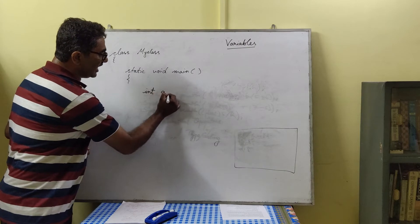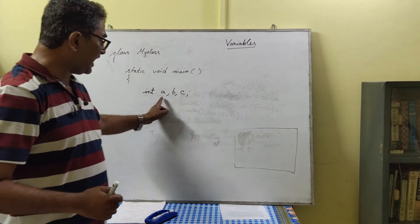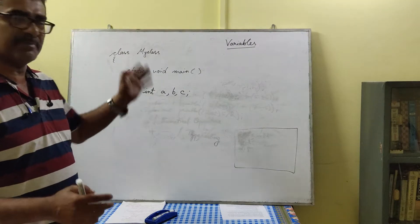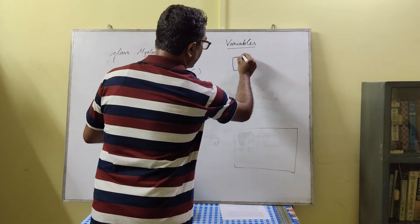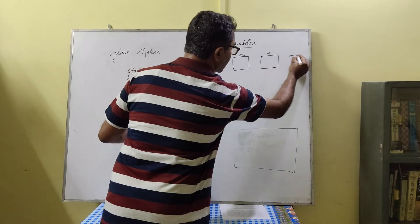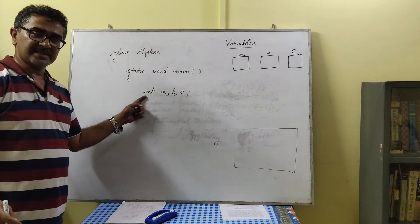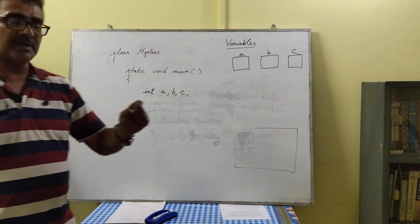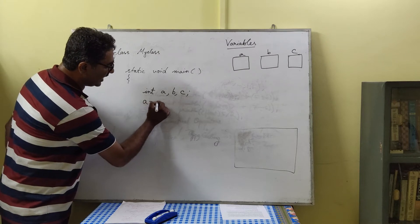When we write 'int a, b, c', this indicates that a, b, and c are three memory locations in RAM with those names. You can imagine each as a separate memory space. The keyword 'int' indicates that all these memory spaces can store integers — numbers without a decimal point. We can then store the value 5 inside a by writing a = 5.